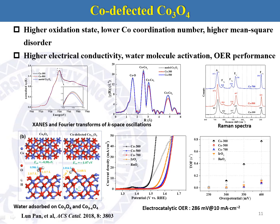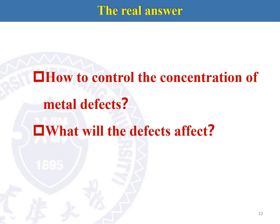We further applied this method to produce electrocatalysts, like cobalt oxides. The introduction of cobalt vacancies increases the oxidation states of cobalt, lowers the cobalt coordination number, and increases mean square disorder. The cobalt vacancy increases the electrical conductivity of the material. The vacancy is confirmed by DFT calculation, which shows it can help activate the water molecule for better OER performance. The metal vacancy in metal oxides can be introduced by sol-thermal and thermal calcination methods.